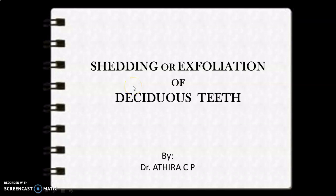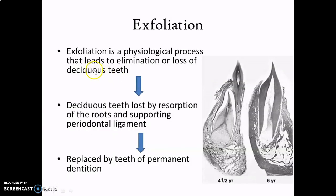Hello everyone. Welcome to e-classes by Dr. Adhira. Today's topic of discussion is shedding or exfoliation of deciduous teeth. Shedding or exfoliation is a physiological process that leads to elimination or loss of deciduous teeth. This process takes place by resorption of roots of the deciduous tooth and supporting periodontal ligament. After shedding or exfoliation of the primary tooth, the permanent successor tooth erupts into position, and thus permanent dentition replaces the primary dentition.